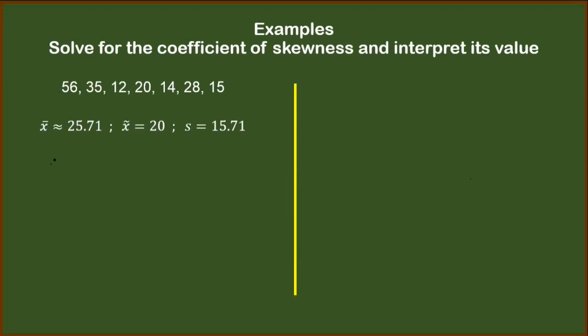So we will use the formula. We have SK equals 3, open parenthesis, mean minus median, over the standard deviation. Our mean is 25.71 and the standard deviation is 15.71. So basically, we are just substituting the values and then solving the resulting expression. So we have here 3 times, open parenthesis, 25.71 minus 20 will result to 5.71, and then this is still 15.71.